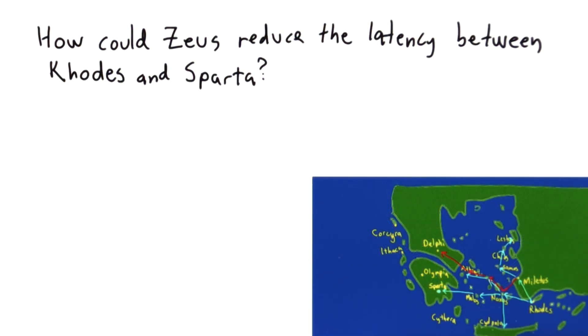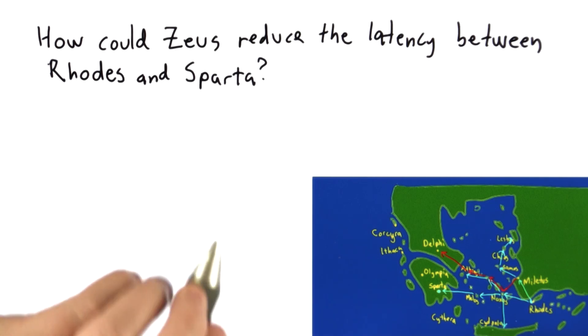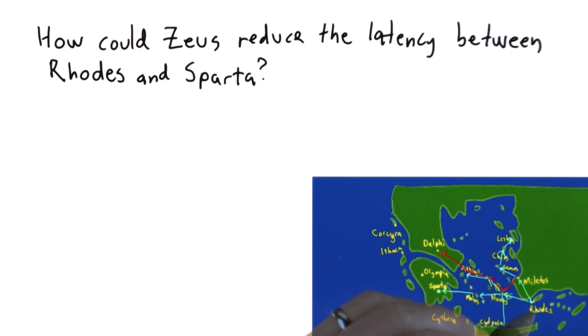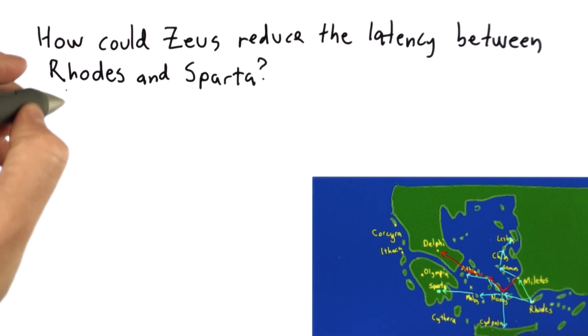So the question is: how could Zeus — and remember that in ancient Greece, Zeus was all powerful — reduce the latency between Rhodes and Sparta? Here are the choices.